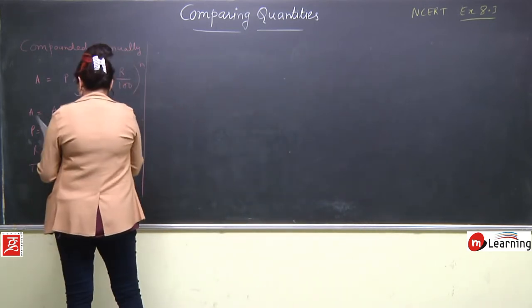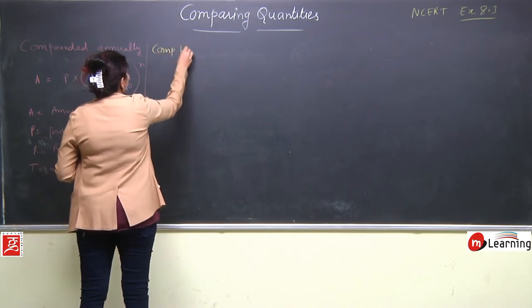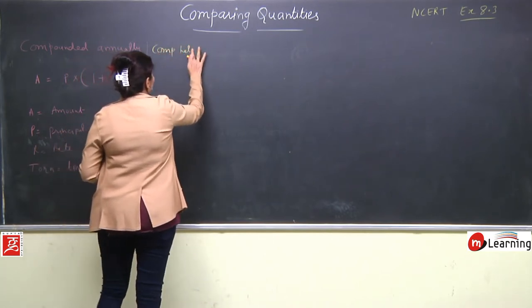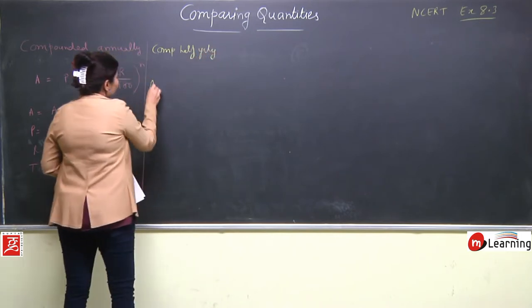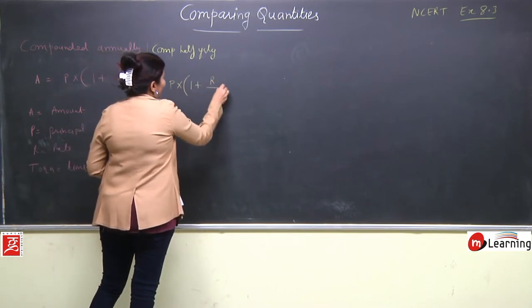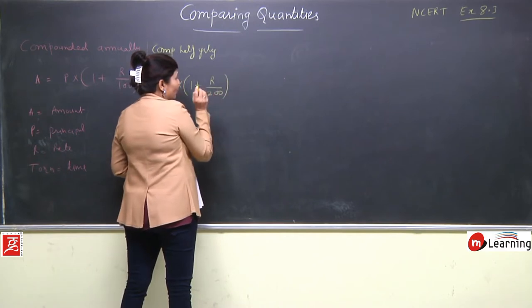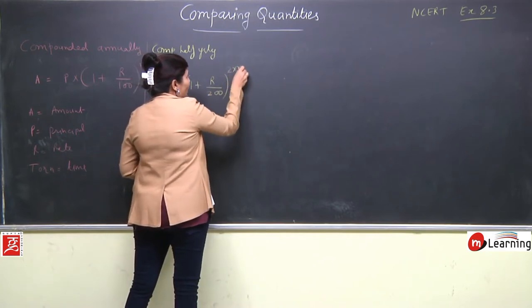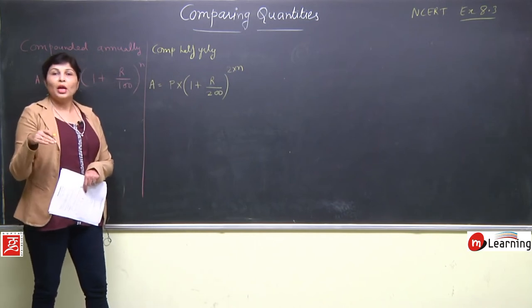Second case is compounded half yearly. The formula has a slight change: Amount = P(1 + r/200)^(2n) - the rate becomes half and time becomes double.